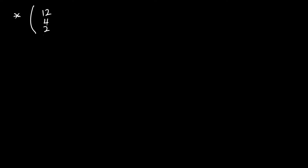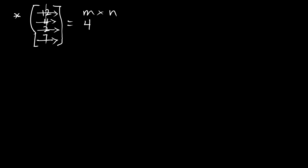Now let's look at some other matrices. Suppose we have the matrix: one, two, four, two, and seven arranged vertically. What is the order? How many rows and how many columns? We can see row one, row two, row three, row four — so m equals four. But we only have one column, so n equals one. This is a four-by-one matrix.